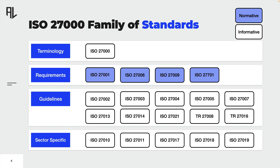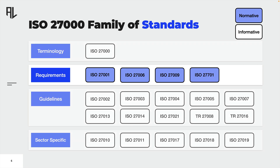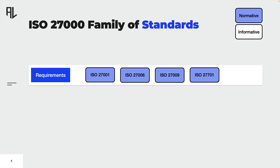Let's now focus on standards specifying requirements. Remember, these are the standards that contain actual mandates that can be audited for compliance. They are usually referred to as normative standards, which means organizations can get certified by external certification bodies in order to demonstrate compliance to outsiders. At the moment, there are four standards containing requirements: ISO 27001, ISO 27006, ISO 27009, and ISO 27701.